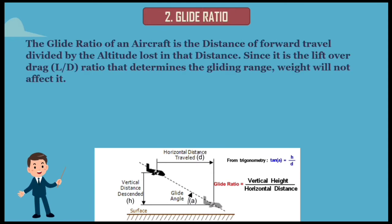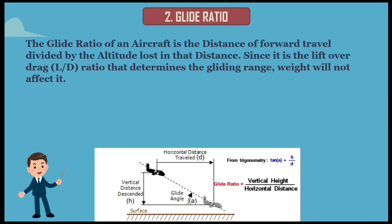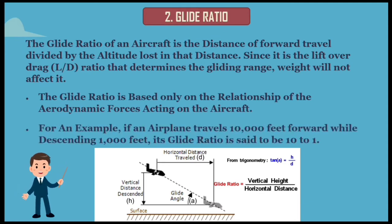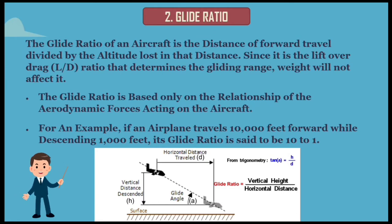Coming to the next topic: glide ratio. The glide ratio of an aircraft is the distance of forward travel divided by the altitude lost in that distance. Since it is the lift-over-drag ratio that determines the gliding range, weight will not affect it. The glide ratio is based only on the relationship of the aerodynamic forces acting on the aircraft. The glide ratio is affected by all four fundamental forces that act on an airplane — weight, lift, drag, and thrust. If all factors affecting the airplane are constant, the glide ratio will be constant.